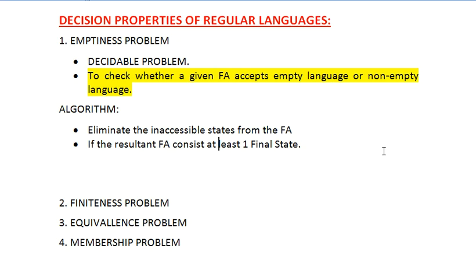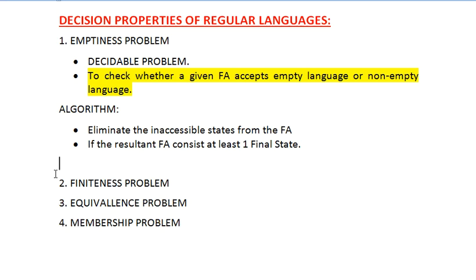To summarize, the emptiness problem checks whether a given finite automaton accepts an empty language or a non-empty language. If the resultant automaton has a reachable final state, it accepts a non-empty language; otherwise it accepts an empty language. This is the first decision property of a regular language.